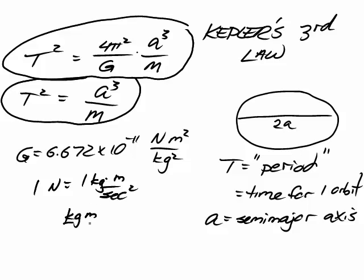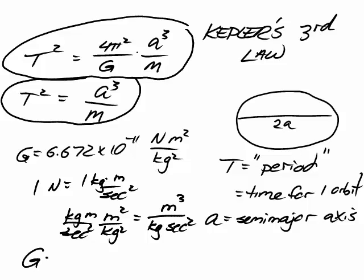And when we do that, we have kilograms, meters over second squared times meters squared over kilograms squared. We end up with meters cubed over, we've got kilograms on top, kilograms squared on the bottom. So, we end up with kilograms on the bottom, and we still have our second squared.